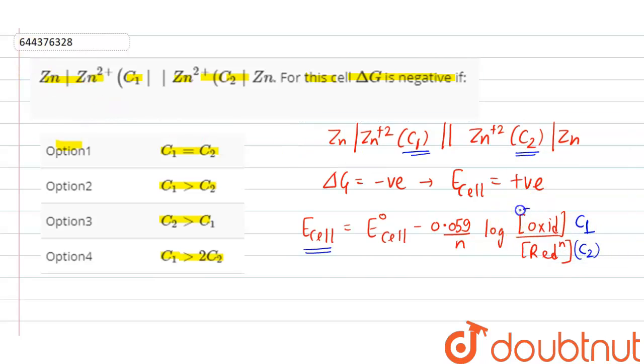So in case if this C1 value is less than C2, then what will happen? Then this negative value will be decreased.